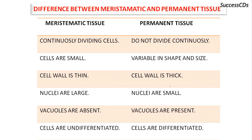Differences between meristematic and permanent tissues: meristematic tissues are continuously dividing cells, whereas permanent tissues do not divide continuously. Cells are small in meristematic tissue; in permanent tissue, they are variable in shape and size. The cell wall is thin in meristematic tissue and thick in permanent tissue. Nuclei are very large in meristematic tissue compared to permanent tissue. Vacuoles are absent in meristematic tissue and present in permanent tissue. Cells are undifferentiated in meristematic and differentiated in permanent tissue.